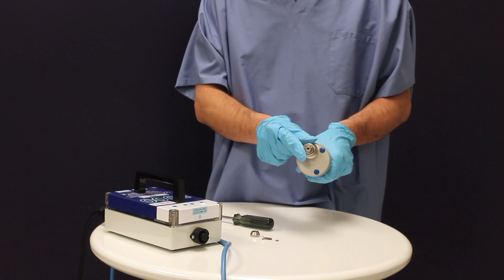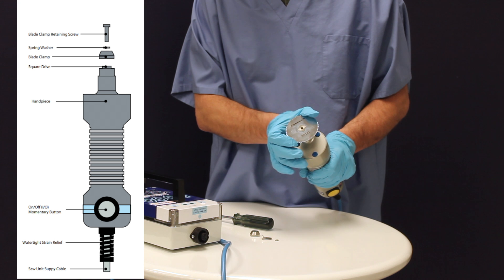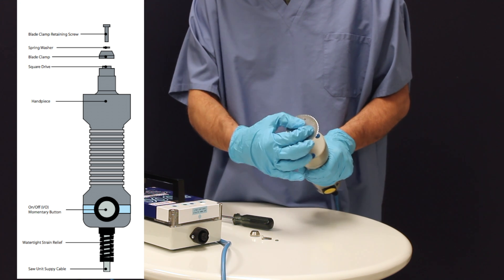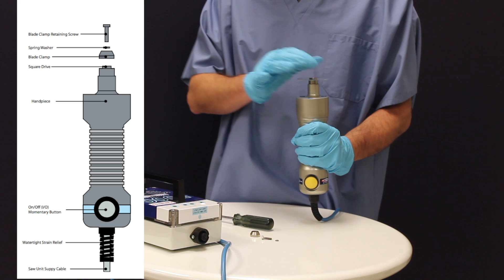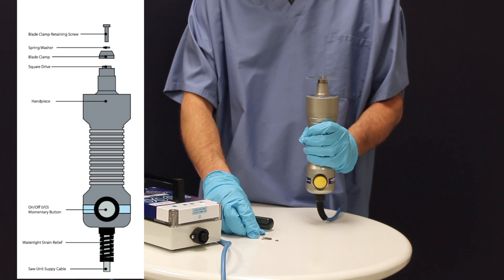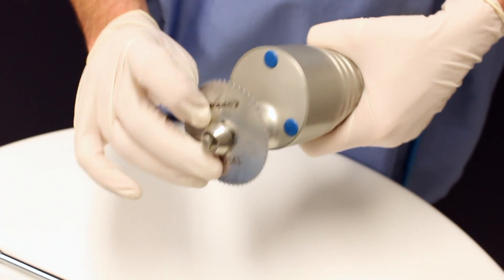When replacing the blades, make sure the middle of the blade fits against the square drive. Lay the blade flat on the arbor by holding the saw perpendicular. This will prevent the blade from slipping.